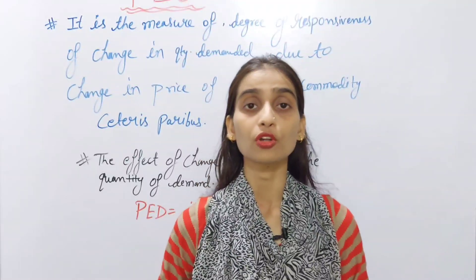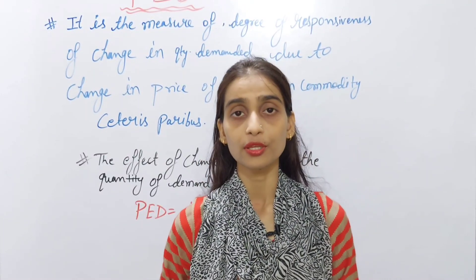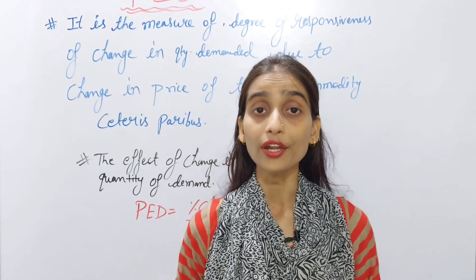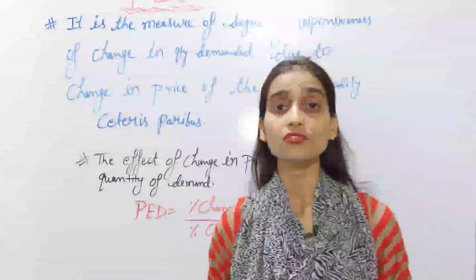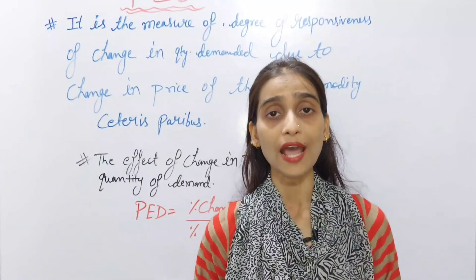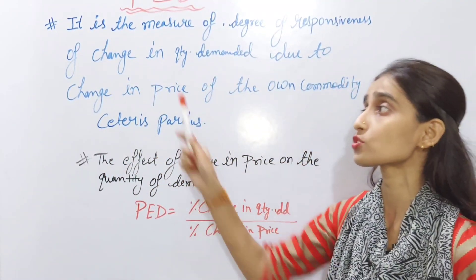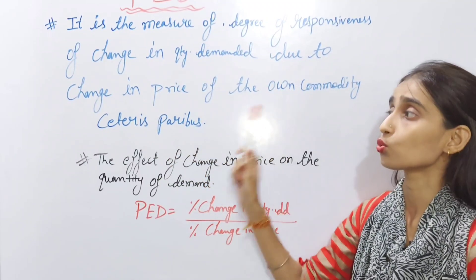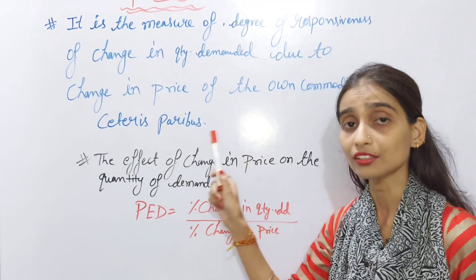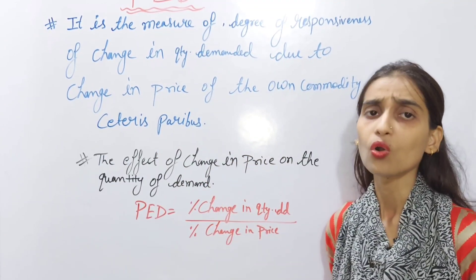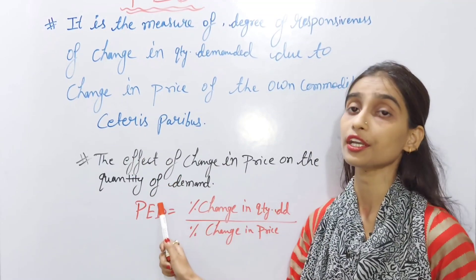As you know, we have already discussed the qualitative definition of demand in the last class, that is the law of demand. Now today we are going to discuss the quantitative definition of demand, that is price elasticity of demand. First we will deal with the definition: it is the measure of degree of responsiveness of change in quantity demanded due to change in price of the own commodity, ceteris paribus, means other things remaining constant.